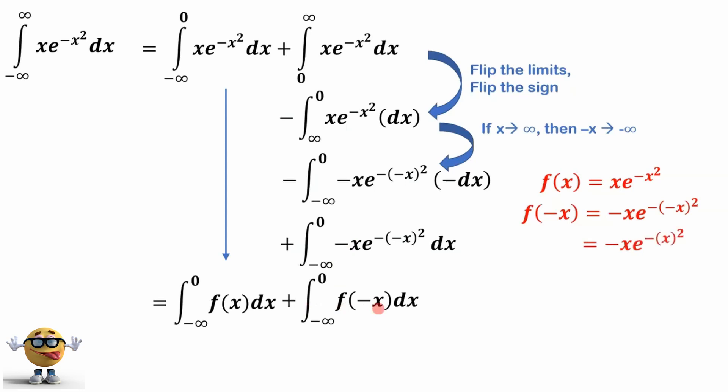Now, it's also equal to negative x times e to the negative x squared. Because we're squaring it, this negative just cancels out. It becomes a positive. And this is equal to negative of our function.